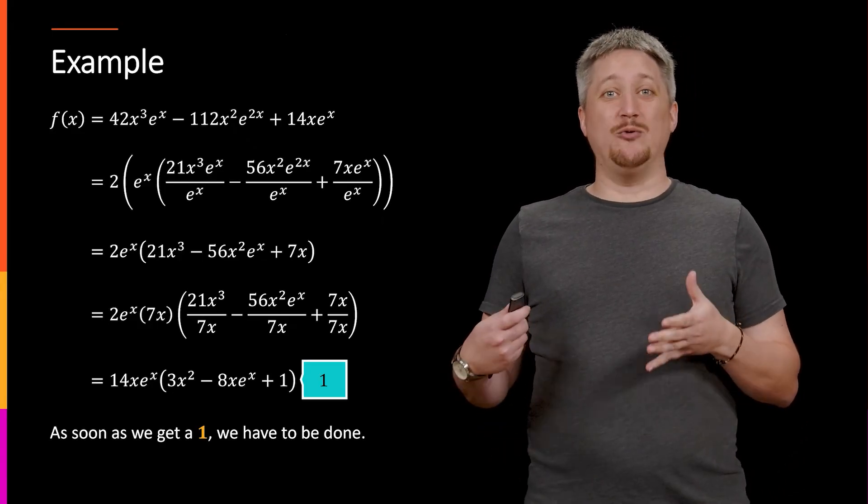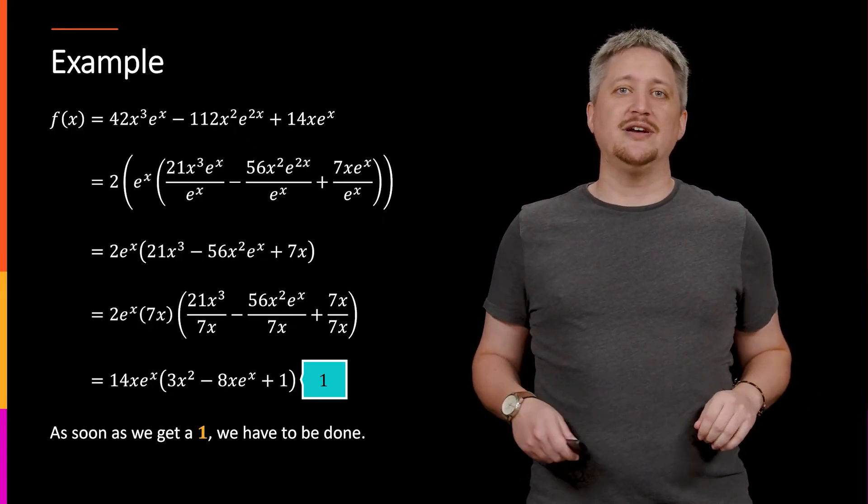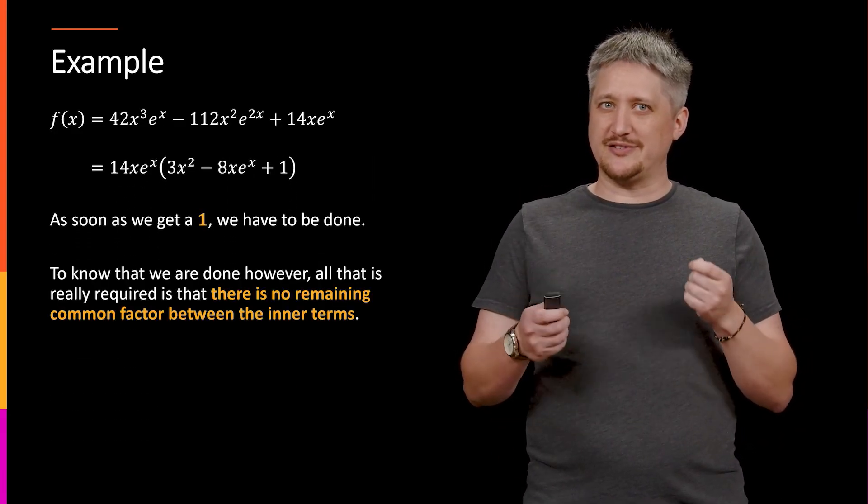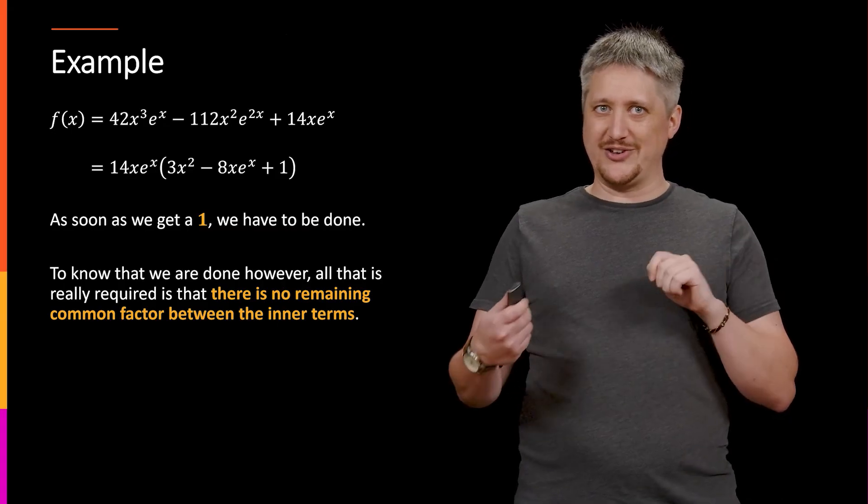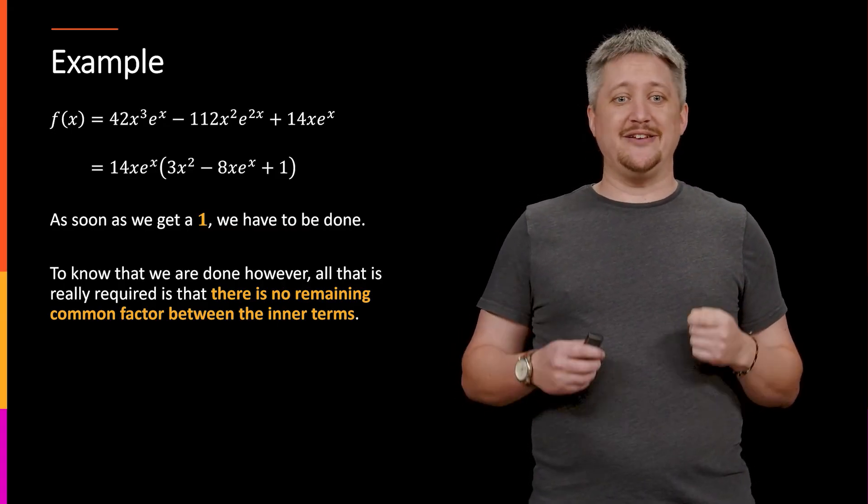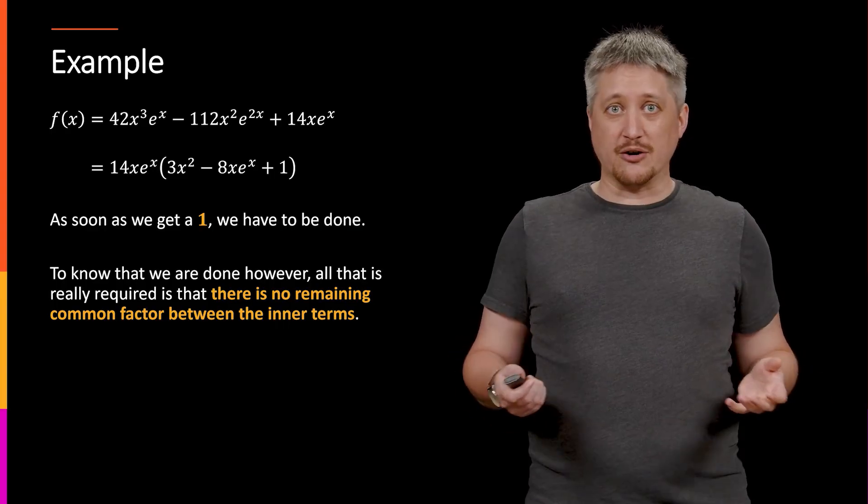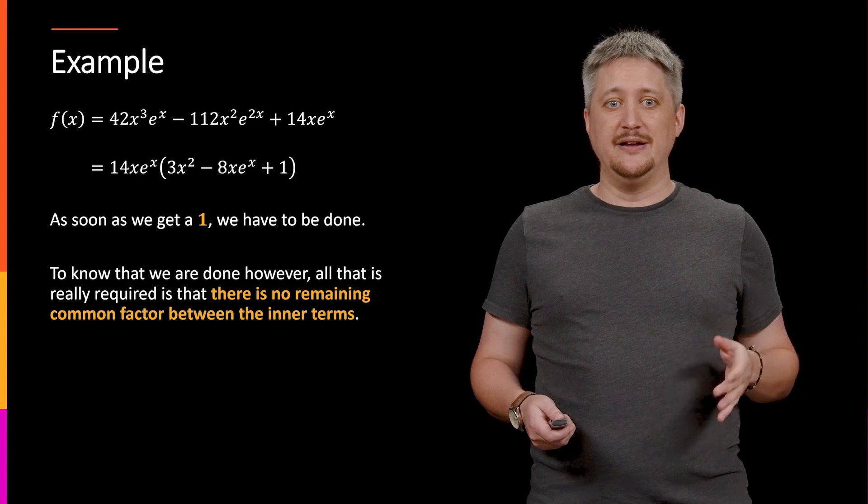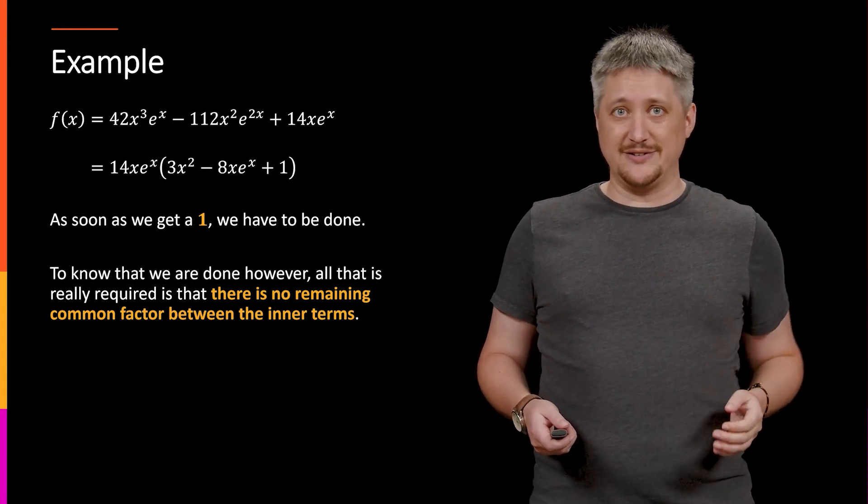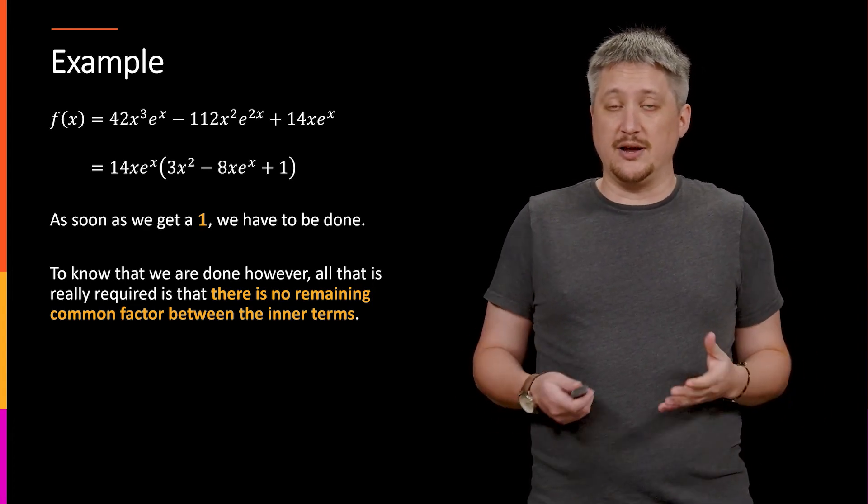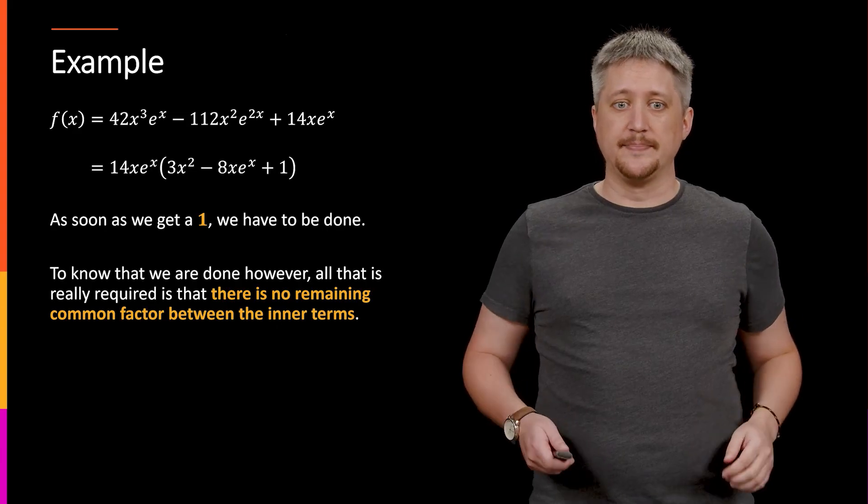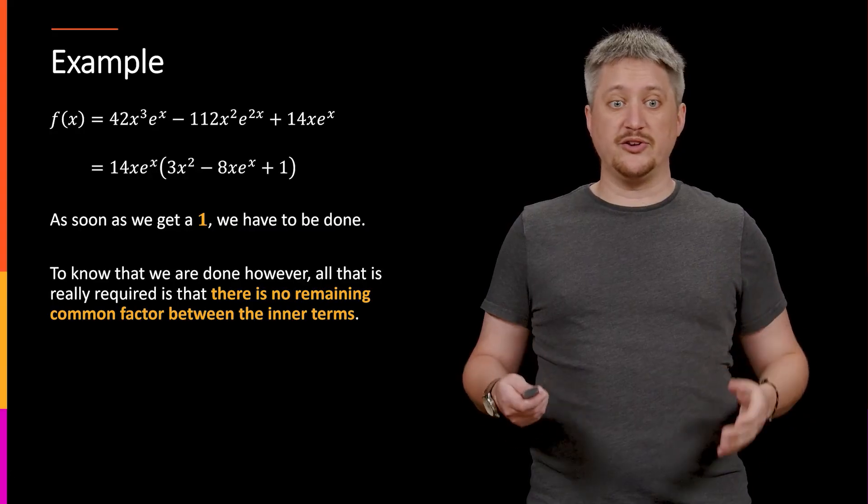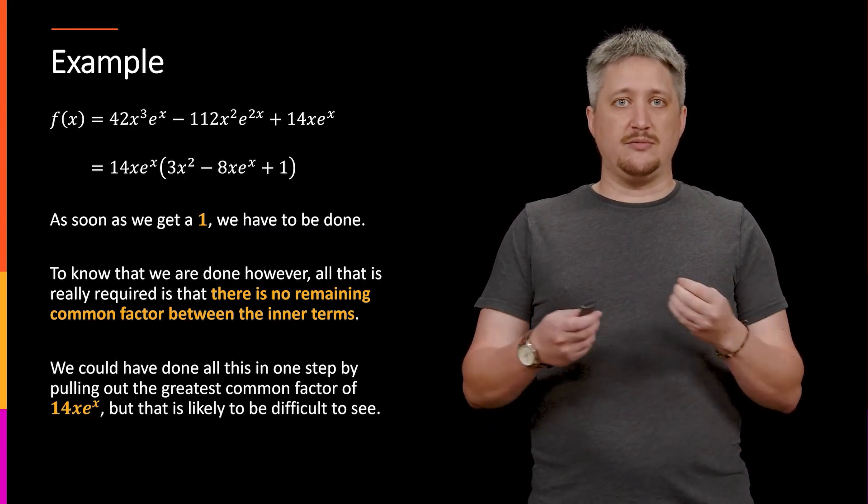So as soon as I see a 1 I know I'm done, I don't have to look. But to be clear, I'm beating on a dead horse, but this is the important other side of this approach: we need to know when we're done. And to know when we're done it's just when there aren't any more common factors. So you may not have a 1. If I had a 3 there or a 5 there instead of the 1 we would still be done, I wouldn't be able to pull anything out. So once I get to the point where there are no remaining common factors among those inner terms then that means that we're done.